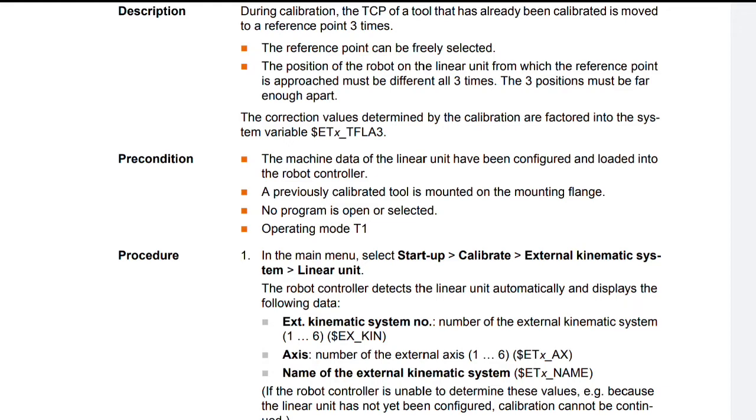External kinematic system number: number of the external kinematic system. Axis: number of the external axis (1 to 6), SET_AX.